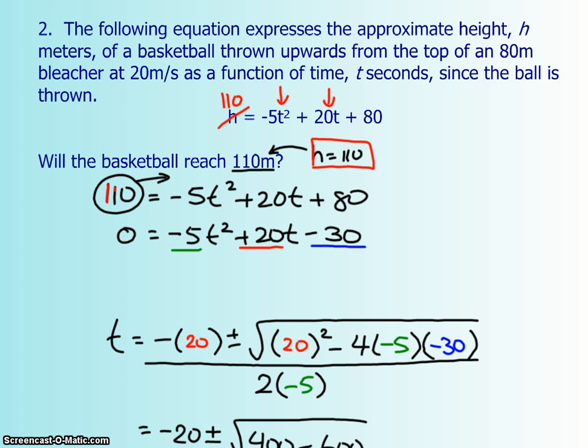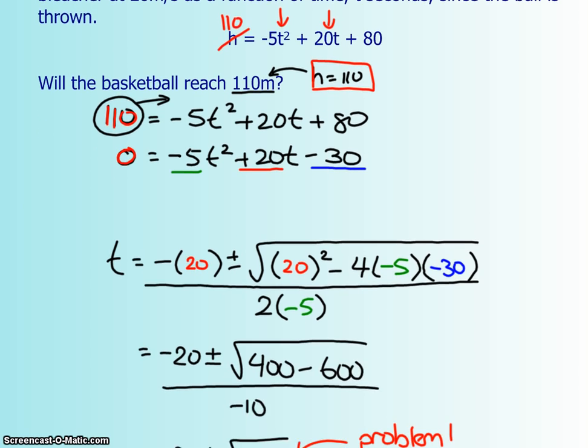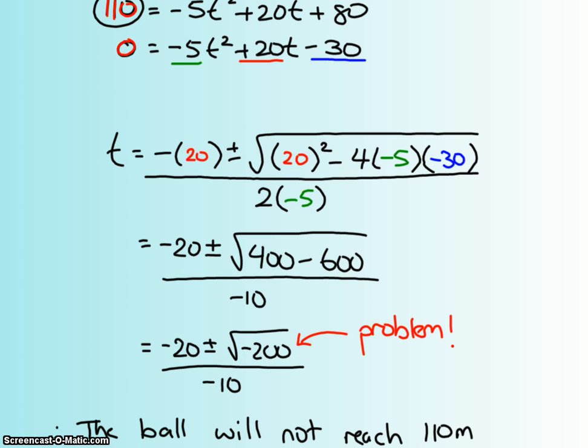Once I put the 110 into the h, I'm going to bring it over to the other side so that I get my 0. And that 110 is going to affect the 80, and it's going to change it to a negative 30. So now what I'm going to do is go through all of the quadratic formula again, and we notice we have a square root of negative 200, which is a big problem. Since that means that, in this case, t isn't a normal number, then the ball must never reach 110 meters.